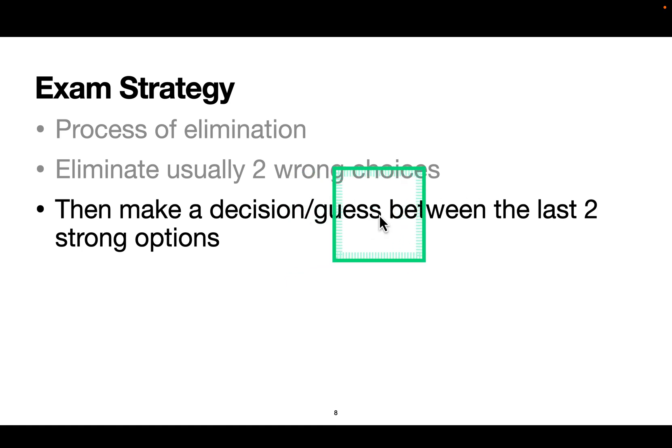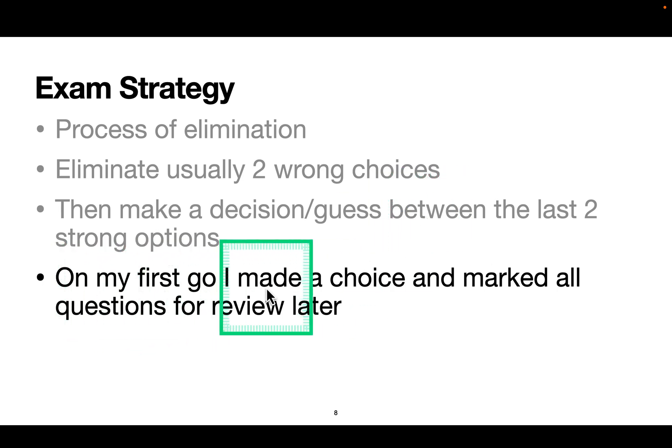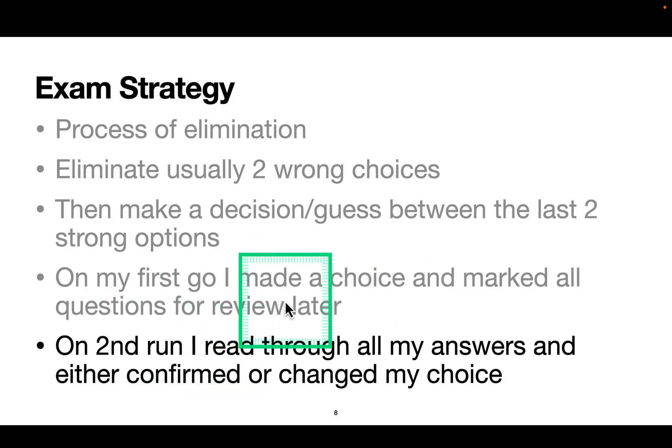In some questions there is nothing like one answer can be more right than the other one, so you have to pick the most suitable answer. On my first go, I made a choice and marked all questions for review later. This is specific to me. I went through all the questions, marked them for review later, and then on the second time around I read through all my answers. I wanted to confirm or change.